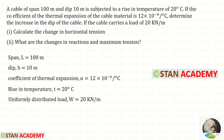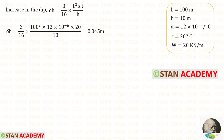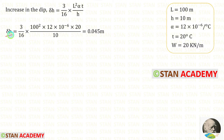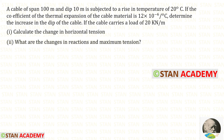First, let us find the increase in the dip of the cable. Using this formula, we can find the increase in the dip sigma h. Let us apply the values in the formula. L is 100, alpha is 12 into 10 power minus 6, T is 20, and h is 10. Finally, for sigma h, we will get 0.045 meter. We have found the increase in the dip of the cable.